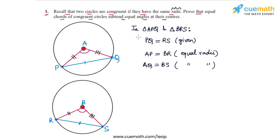So in the two triangles, all the pairs of sides are equal and hence we can apply the SSS congruence criterion. So we can say that triangle APQ is congruent to triangle BRS by the SSS congruence criterion.